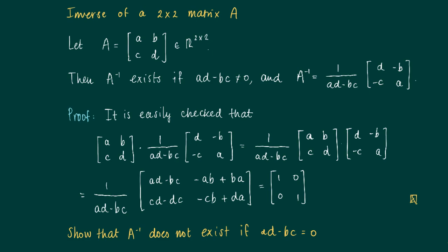So now for you, show that A inverse does not exist if ad minus bc equals 0. Well this is actually also an exercise in the textbook.